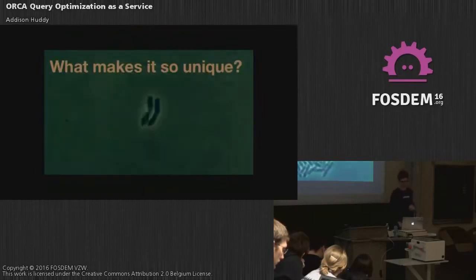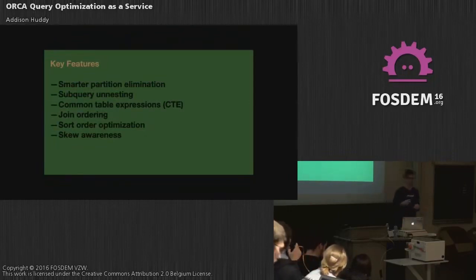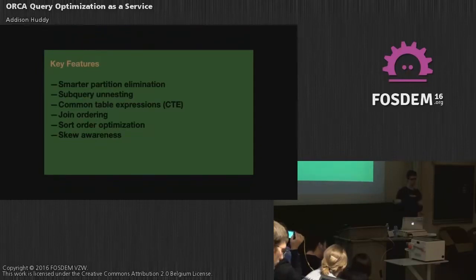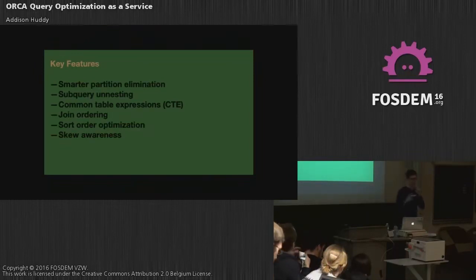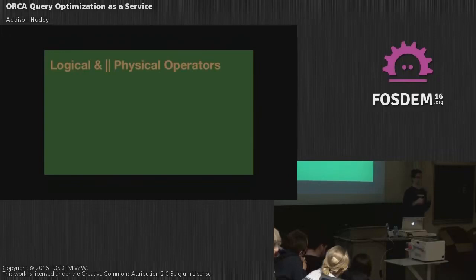What makes Orca so unique? Some key features: we do really smart partition elimination, making sure we're not grabbing data from where we don't need to. We un-nest sub-queries, handle common table expressions, and try to rewrite query trees where necessary. We look at join ordering — how we're actually bringing joins together — and sorting. And we're very aware of skew, doing a lot of cardinality estimation to understand the underlying data.